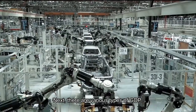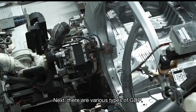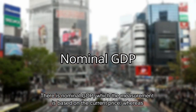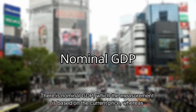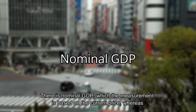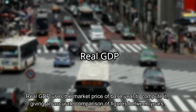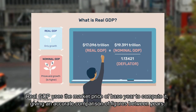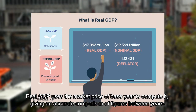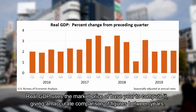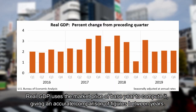There are various types of GDP. There is nominal GDP where the measurement is based on the current price, whereas real GDP uses the market price of a base year to compute it, giving an accurate comparison of figures between years.